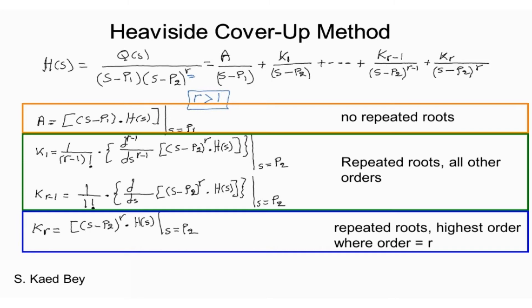However, to find the coefficients k1 all the way to kr-1, which represents the repeated roots with lower orders, require differentiation with respect to s.